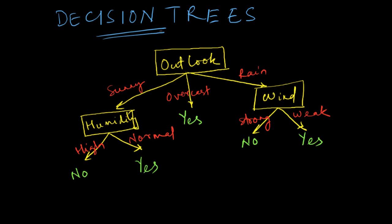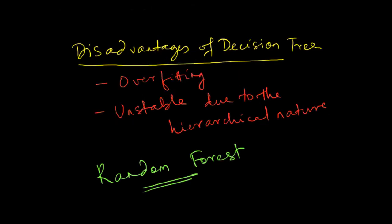Although decision trees have several advantages listed in the previous video, they also suffer from two important disadvantages. One is that they are prone to overfitting, and the second is that they are very unstable due to their hierarchical nature. The problem of overfitting essentially means that your algorithm has a low bias and a high variance.